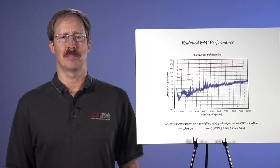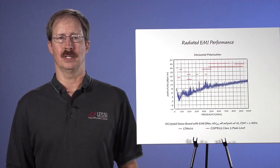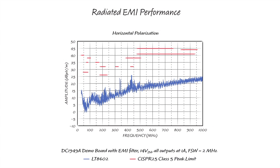These are the independent lab results for the radiated emission of our demo board. As you can see, the LT8602 easily passes CISPR25 class 5 limits in both horizontal and vertical polarizations.